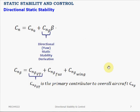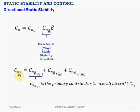This equation describes the sum of all yawing moment coefficients about the aircraft center of gravity. This equation is written as a function of the side slip angle beta, and Cnβ here is the directional stability derivative. The Cnβ for the whole airplane can be computed by adding up all the Cnβ contributions from the vertical tail, the fuselage, and the wing.